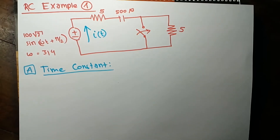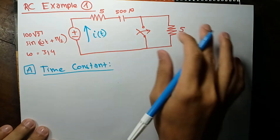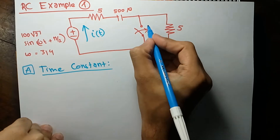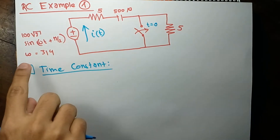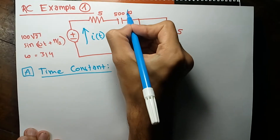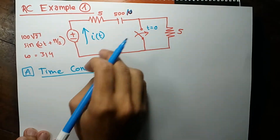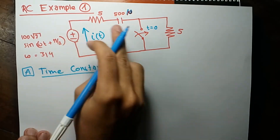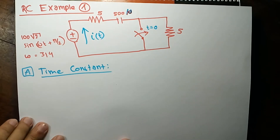We will now cover RC circuits Example 1 — RC transients. This is the circuit diagram; there is a switching operation that occurs at t equals zero. The voltage source is given with omega equal to 314, and there is a capacitor. We are asked to find the voltage and current that the source supplies as a function of time.